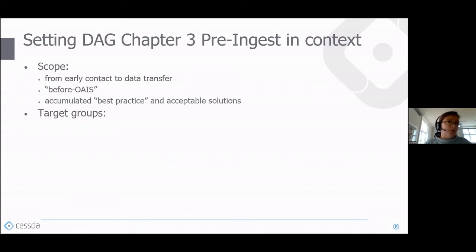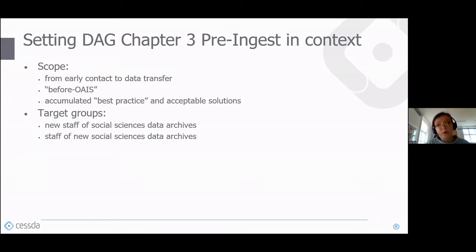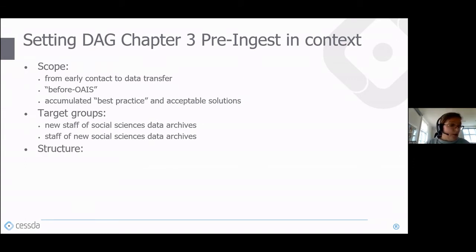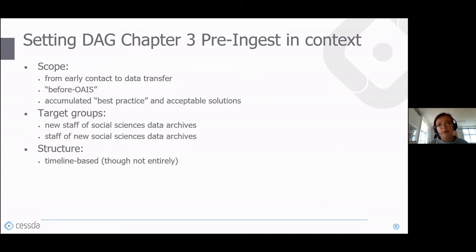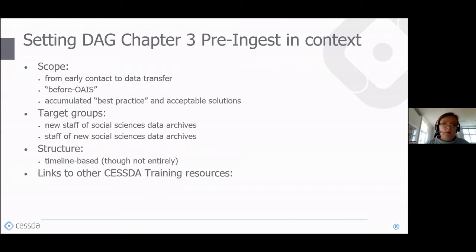The target group for this chapter is new staff of social science data archives, or staff of new social science data archives who know the principles but want the know-how for working with them. The structure is basically timeline-based or chronological, though not entirely — we tried to structure information that way.